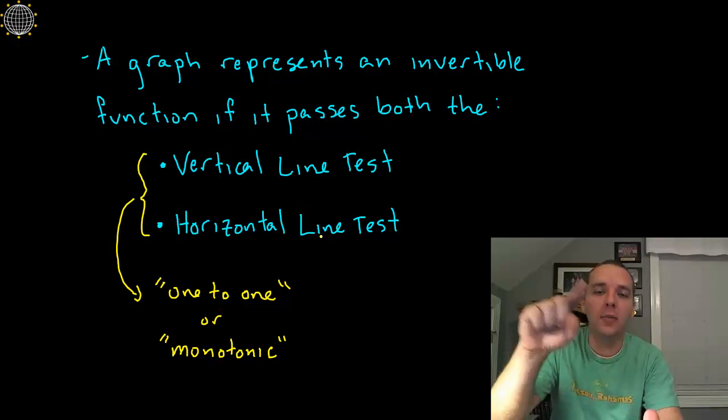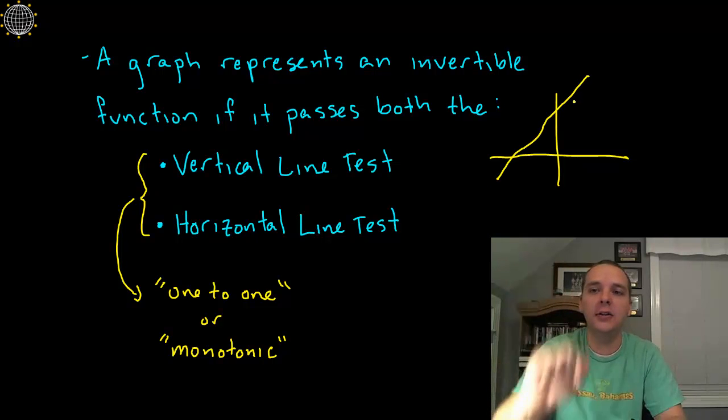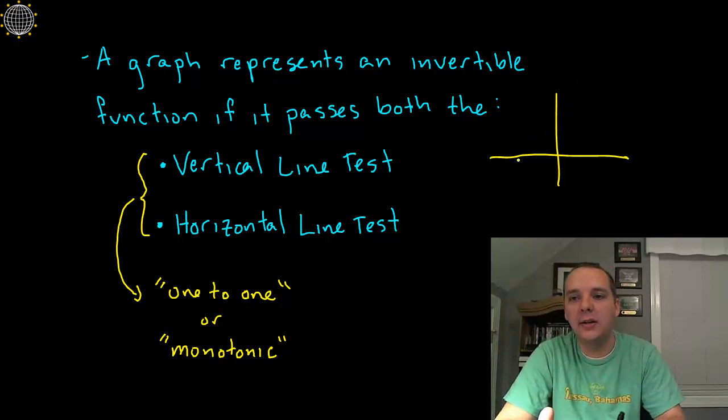And here's why it works. If your function is monotonic, just increasing, it's going to be one to one, it's going to pass both the vertical line test and the horizontal line test.